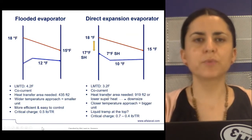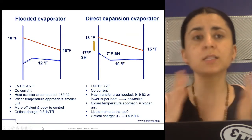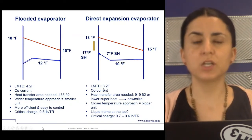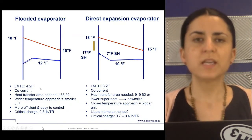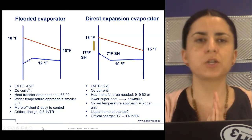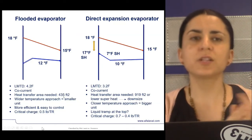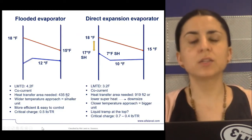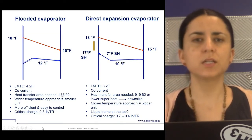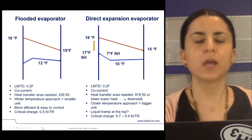LMTD, which is the temperature relationship between inlet and outlet temperatures, dictates the size of the heat exchanger. In this case, with the flooded heat exchanger, we will need less heat transfer area than direct expansion. This translates into a lower cost of the heat exchanger.